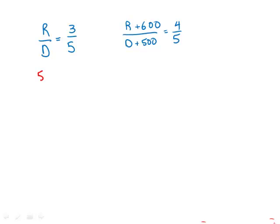First one, I'm just going to cross multiply: 5r equals 3d. That's the result of cross multiplication. I'll just put that aside. That's going to come in handy later.